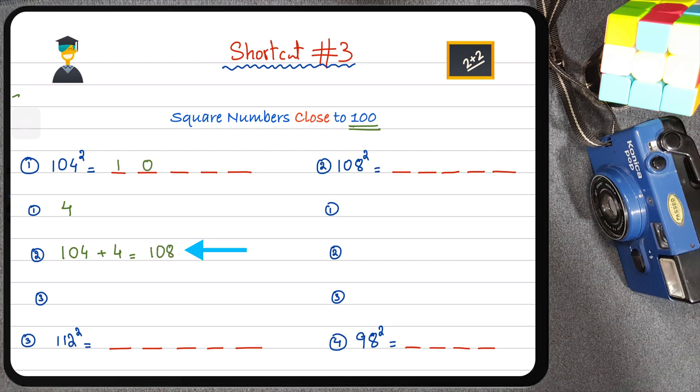Here I've obtained my first three out of the five digits. Now in step 3 we're going to obtain the remaining two digits. I'm going to go back to the value of step 1 and simply square it. What's the square of 4? 4 squared is 16. So the answer to 104 squared is 10,816.